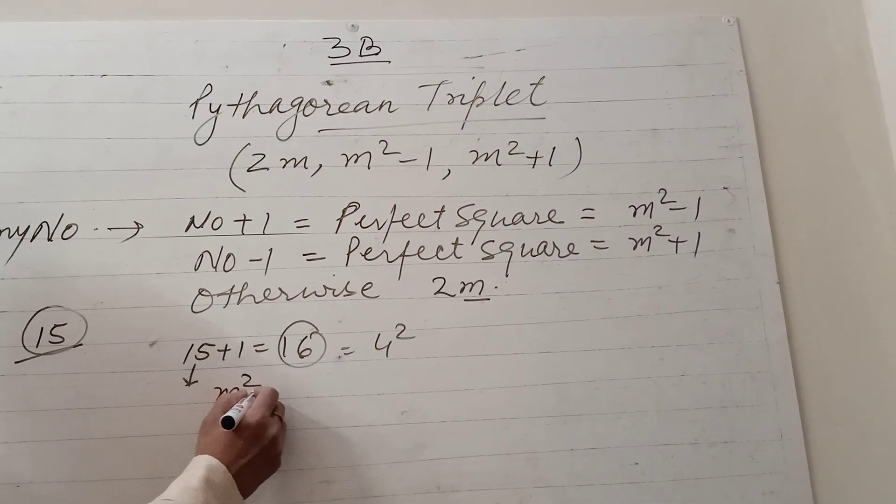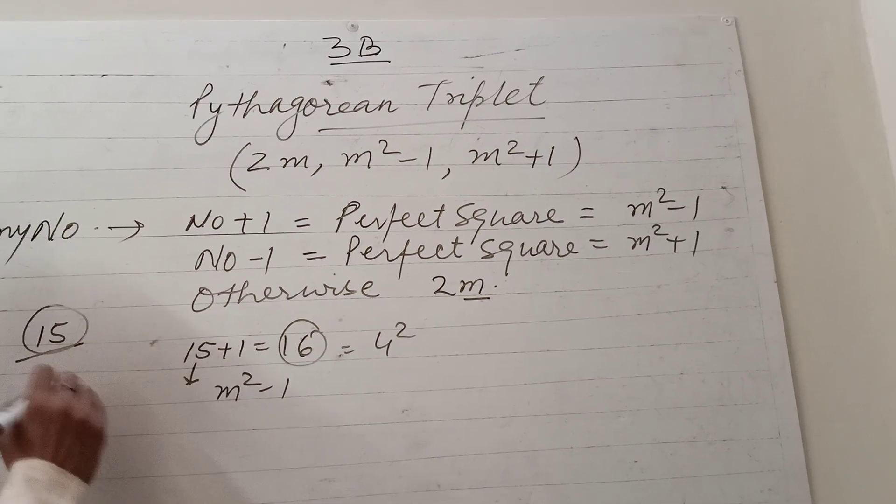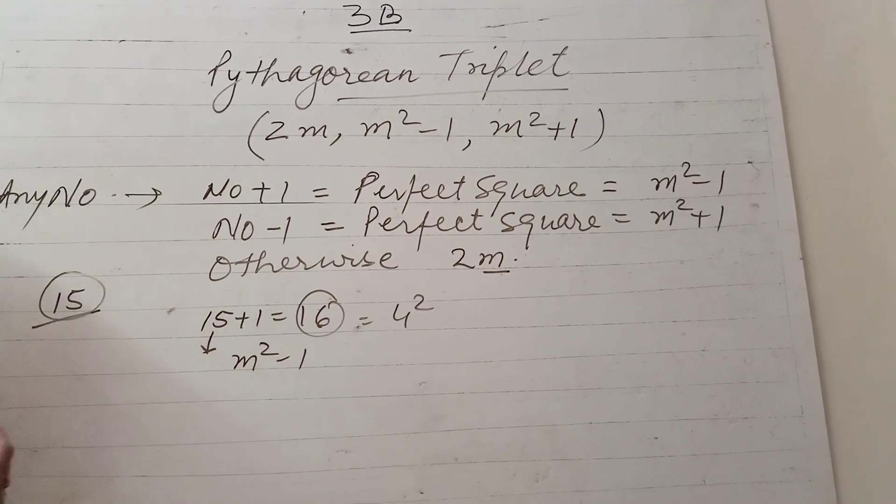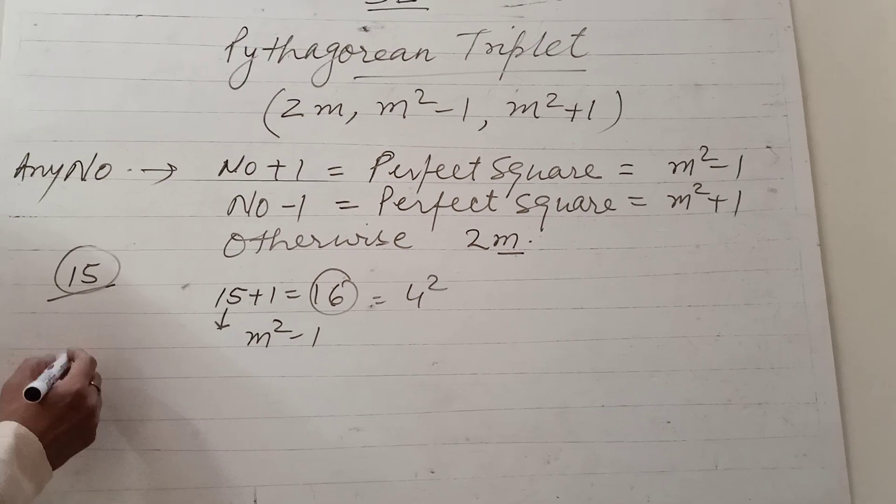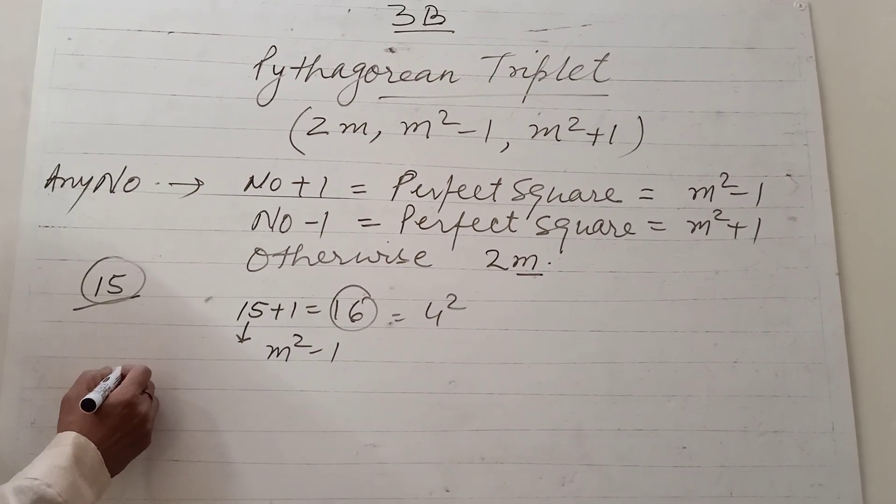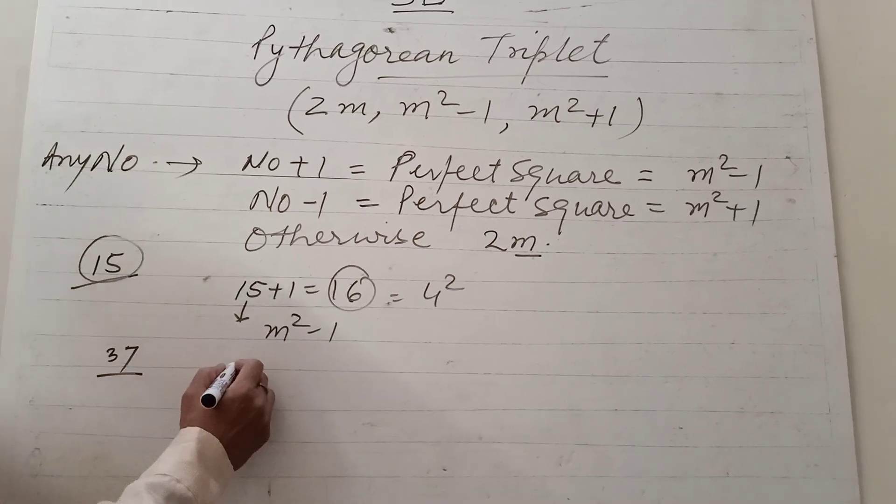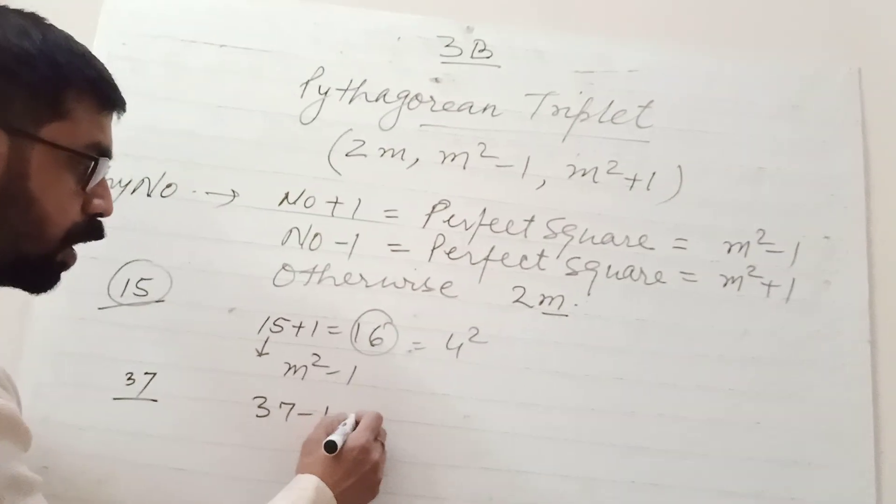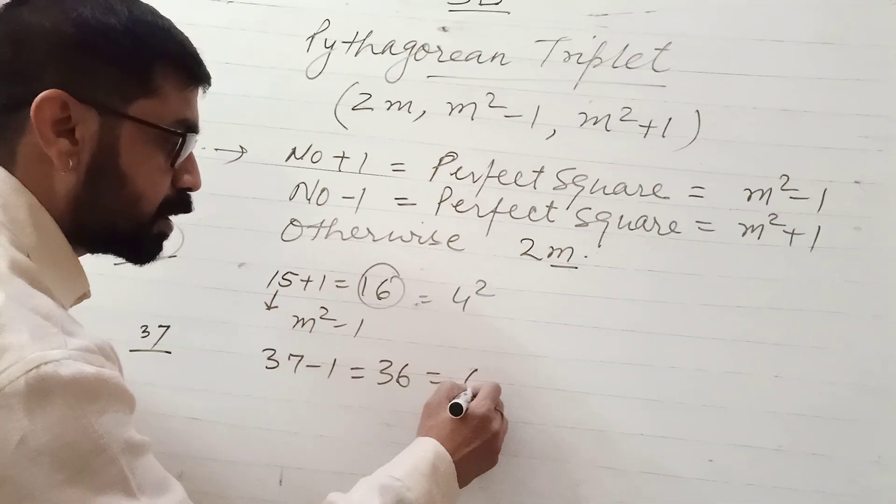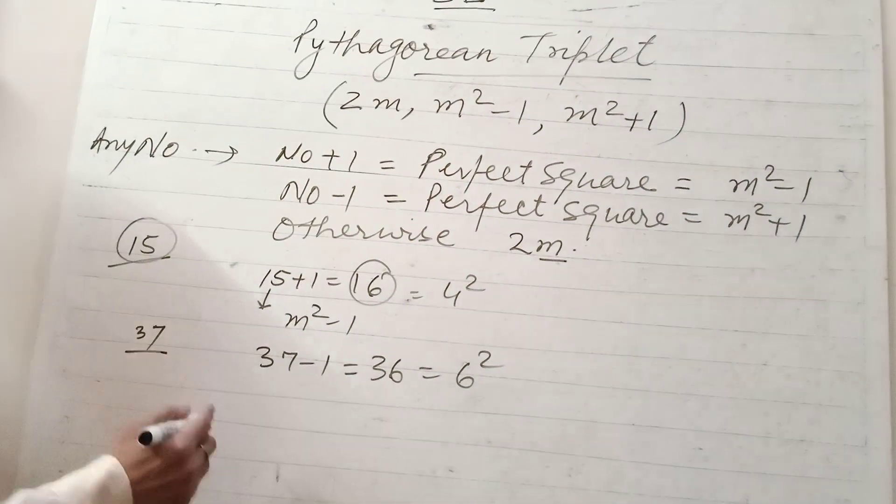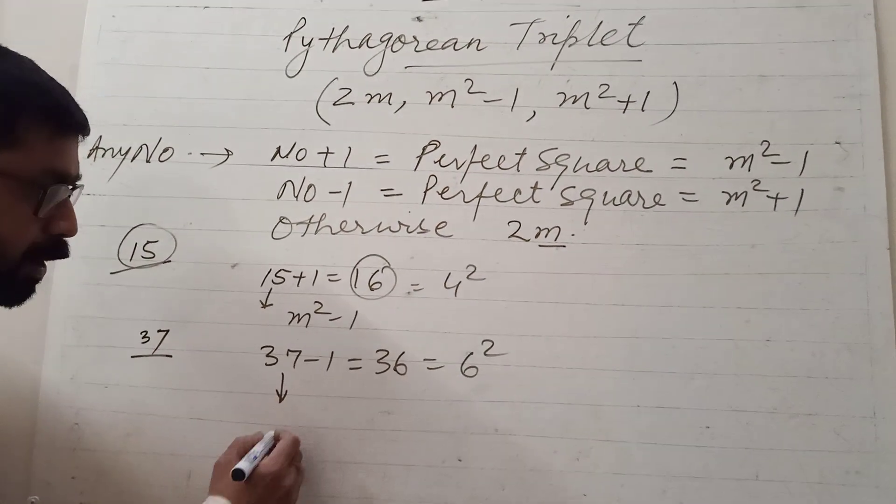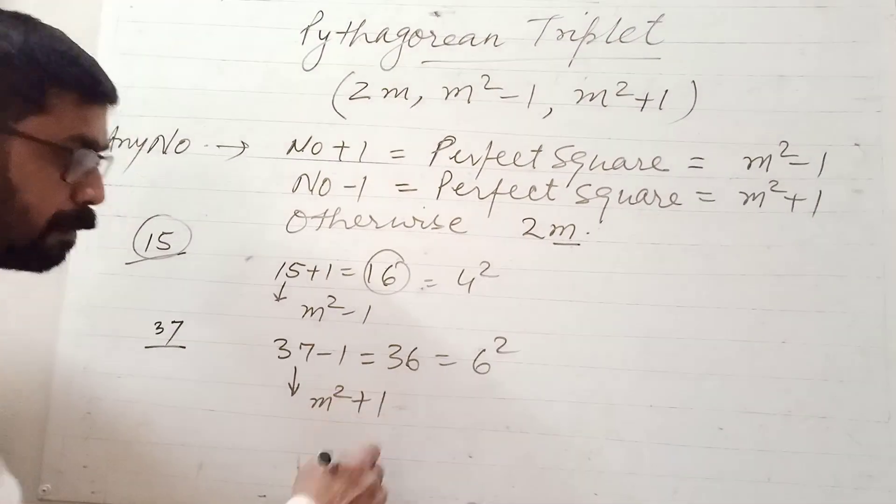This is the value of m² - 1. Suppose I have given you the number 37. So 37 - 1 = 36, which means m² + 1 = 36, which is the square of 6. So 37 is the value of m² + 1.